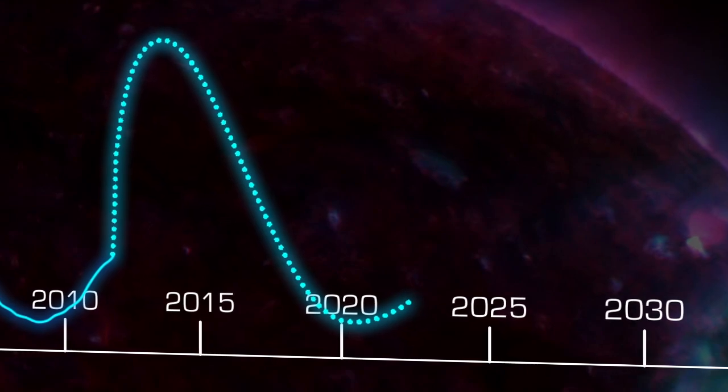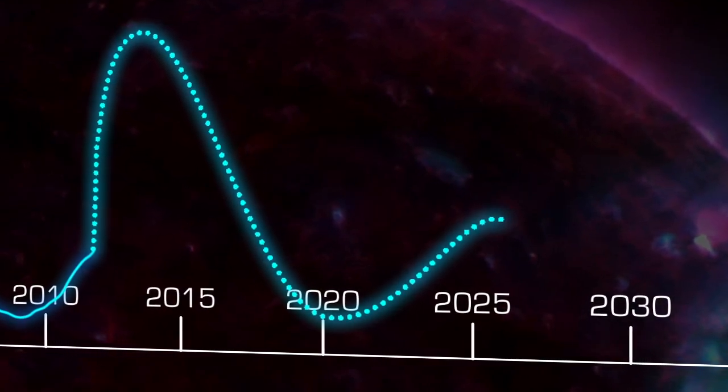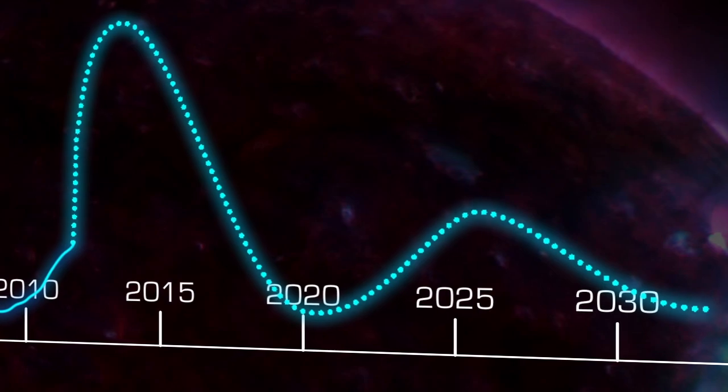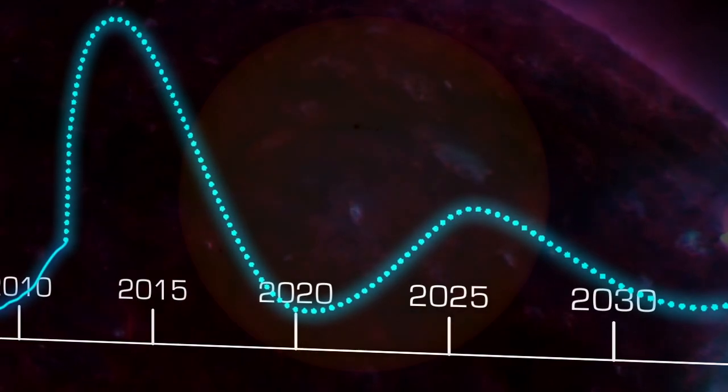The slower-than-expected progress of this sunspot cycle has led some to speculate that the next sunspot cycle might be very minimal, with few sunspots even at solar maximum.